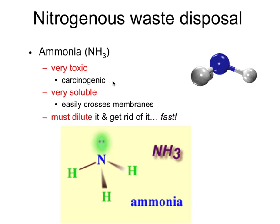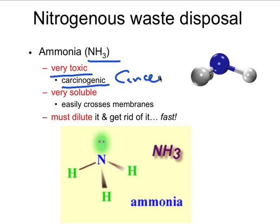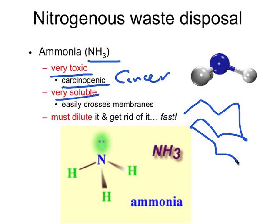Nitrogenous waste usually makes ammonia, which is NH3. NH3 is very toxic — it can kill you — and it is also carcinogenic, meaning it causes cancer. It's very soluble, which means it can jump from membrane to membrane pretty easily, moving from cell to cell throughout your body and different tissues.